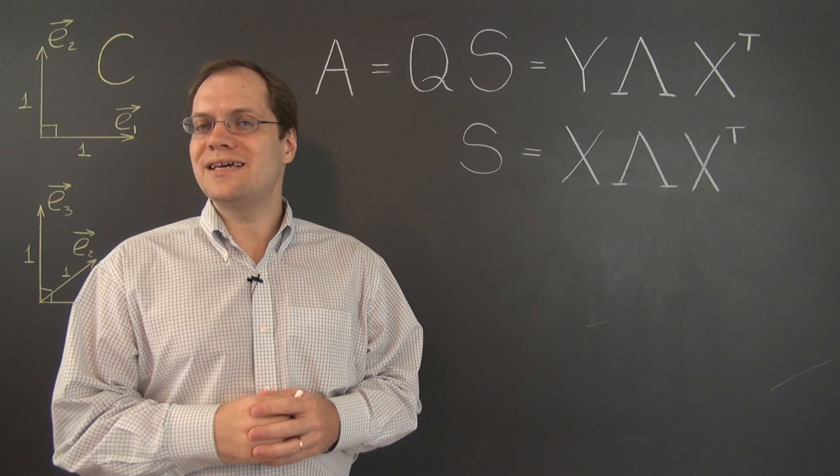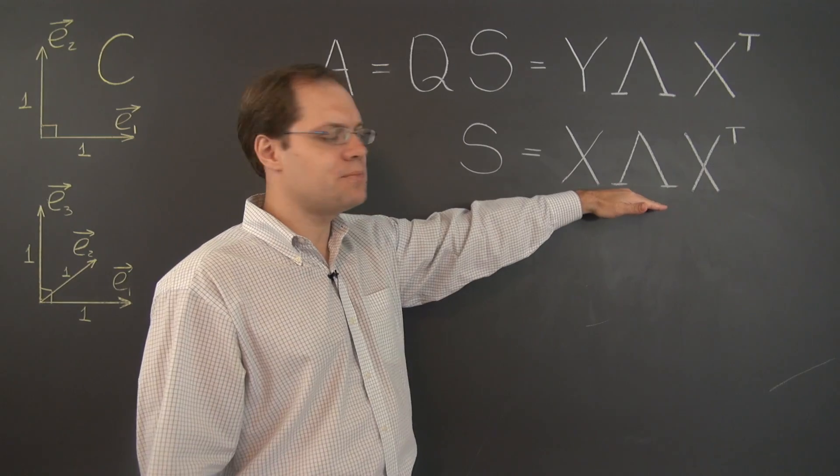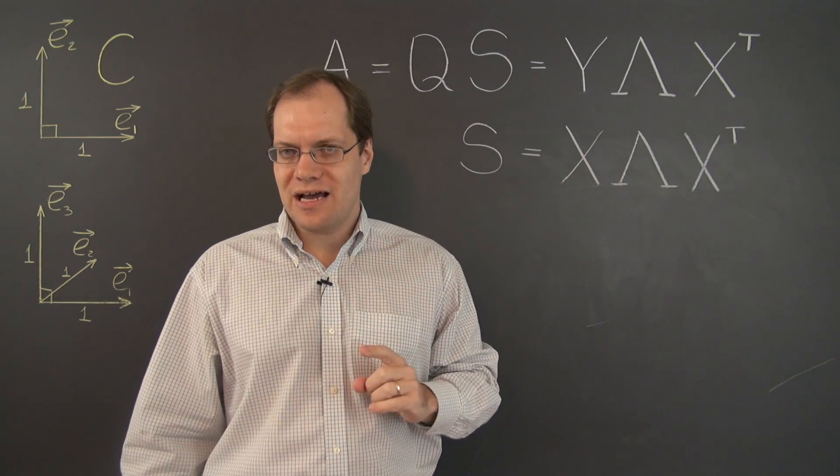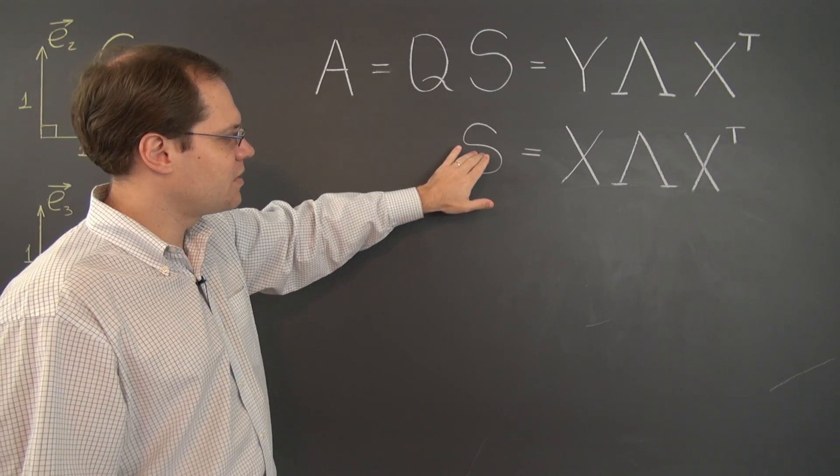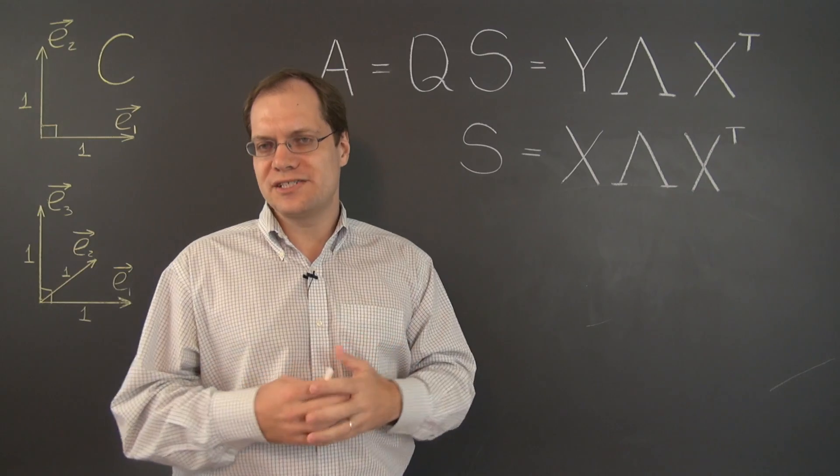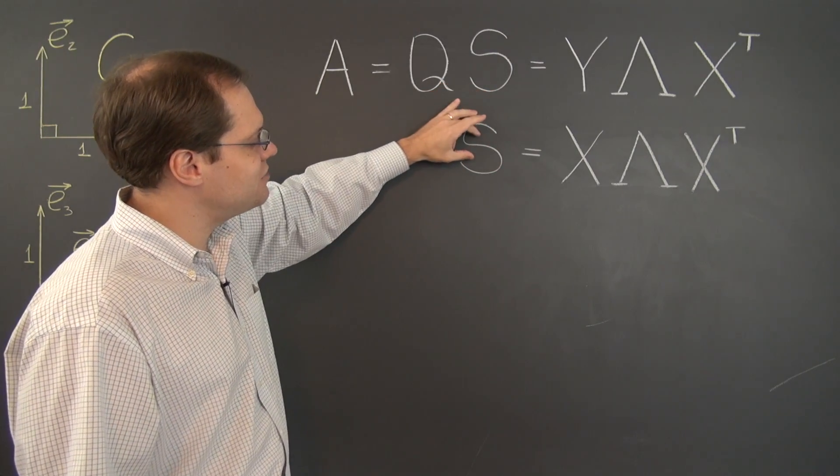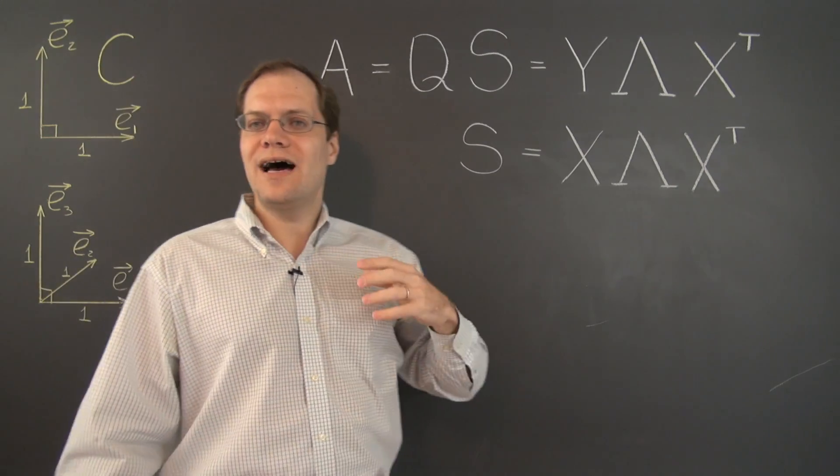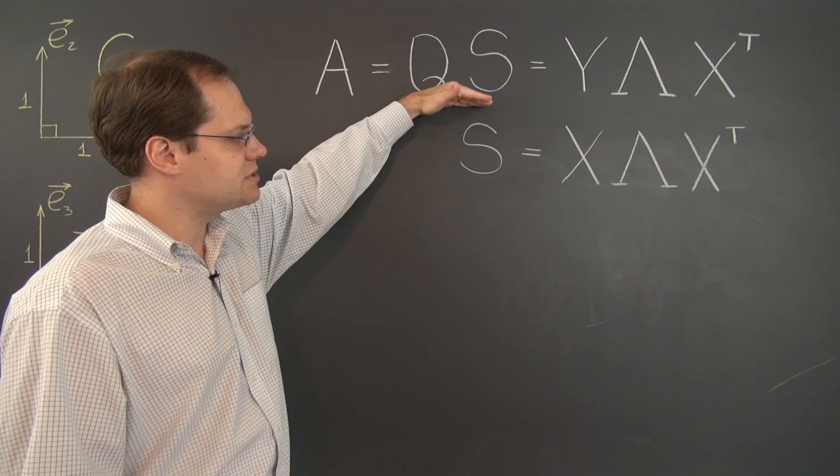Alright, so once again, our starting point is this decomposition. And what I have just written on the board is the eigenvalue decomposition for the symmetric matrix S. And as you recall, symmetric matrices always have full sets of eigenvalues. In the case of this decomposition, the eigenvalues of this matrix are all non-negative. That was our convention in establishing this decomposition.